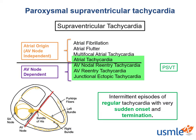Common types of PSVTs are atrial tachycardia, AV nodal reentry tachycardia, AV reentry tachycardia, and junctional ectopic tachycardia. These are grouped together as PSVTs due to their sudden onset, termination, and regular rhythm. AFib is not a PSVT because it produces an irregularly irregular rhythm. AVNRT accounts for about 60% of all PSVTs, AVRT accounts for about 30%, atrial tachycardia about 10%, and junctional ectopic tachycardia is rare — primarily occurring in the pediatric population.